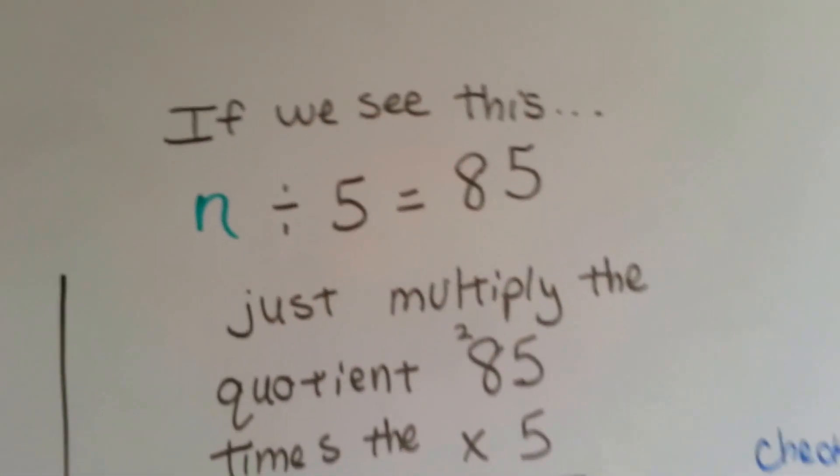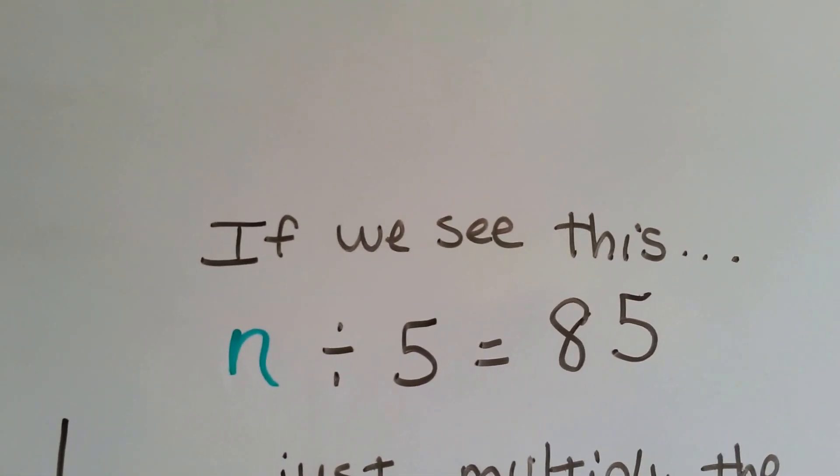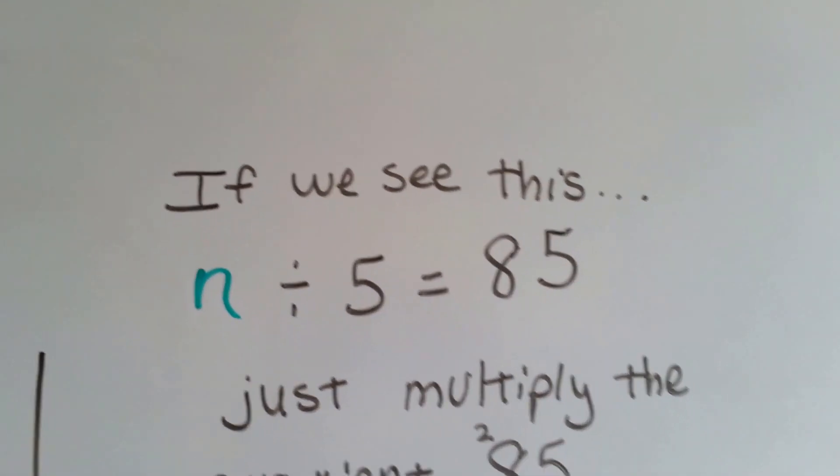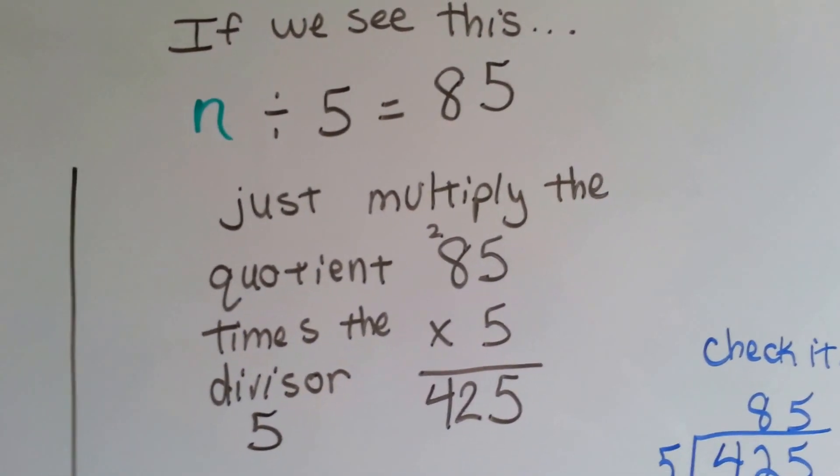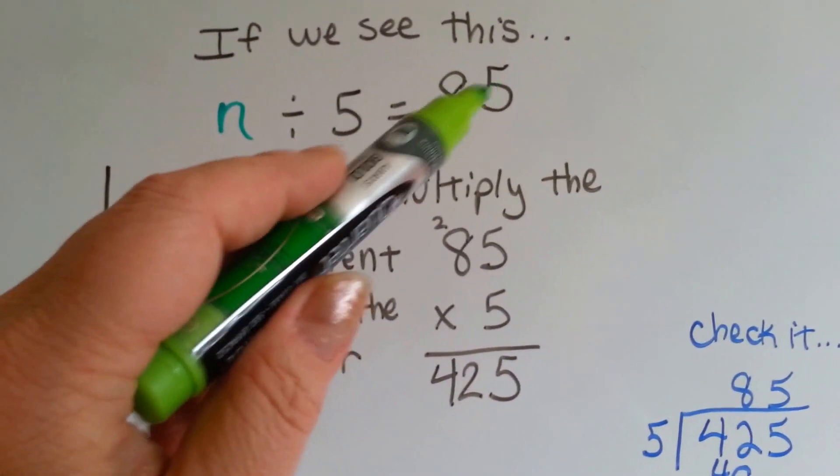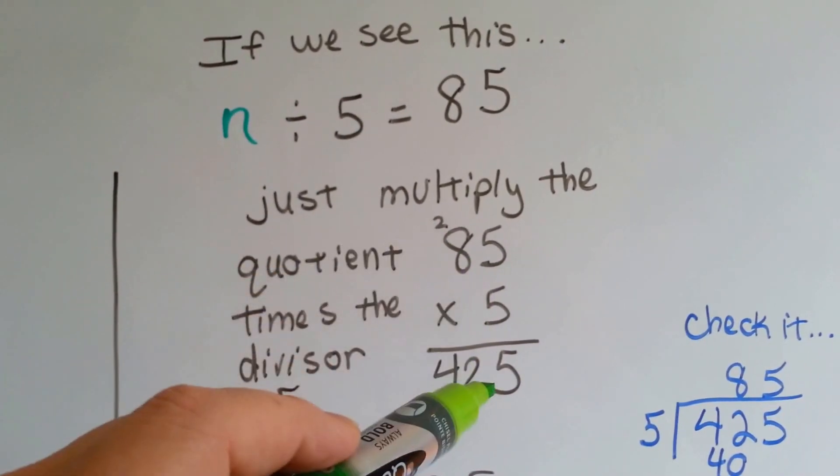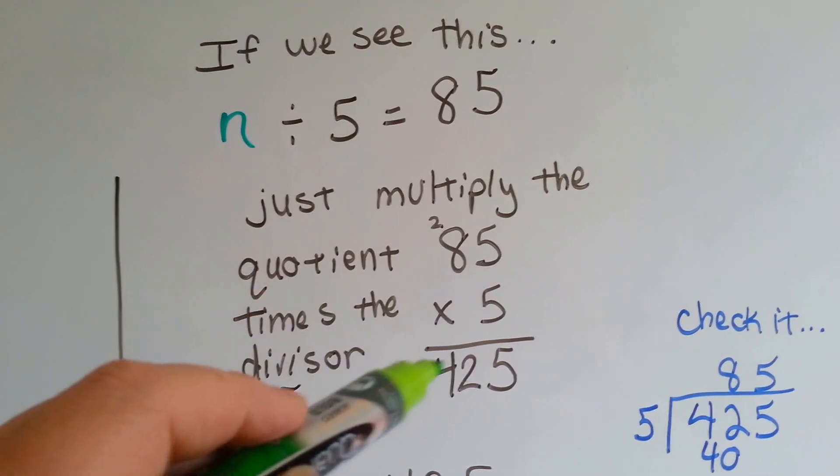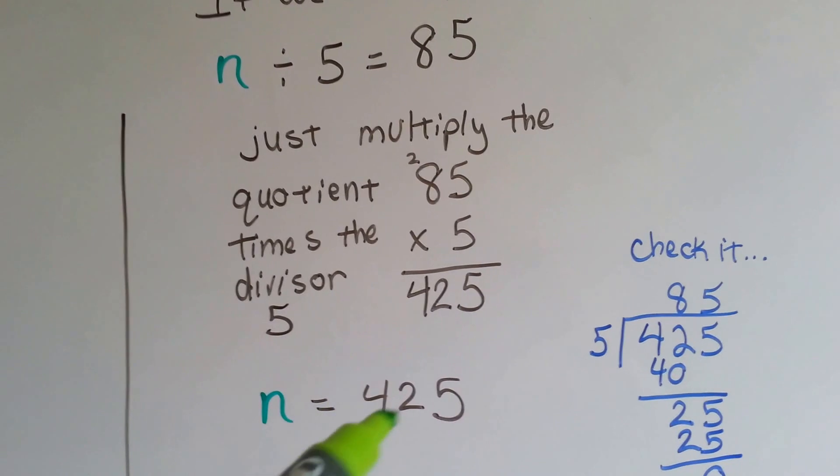What happens if you see this? What if you see n divided by 5 equals 85? How do we do that? Think of how we checked our multiplication problem. We just multiply the quotient by the divisor. 85 times 5. 5 times 5 is 25. We carry the 2 and put the 5 down. 5 times 8 is 40, plus 2 is 42. The answer is n is equal to 425.